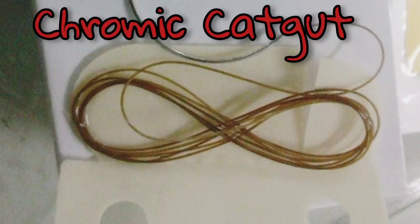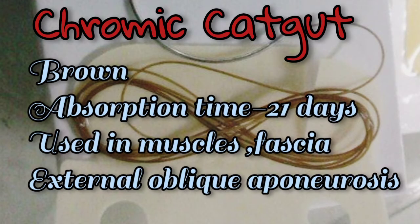Chromic catgut sutures are brown in color and their absorption time is about 21 days. Used in muscles, fascia, external obliques, and aponeurosis.